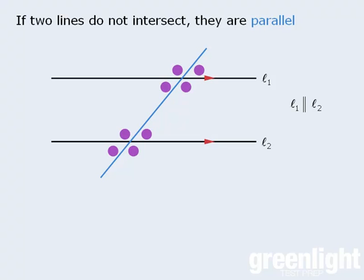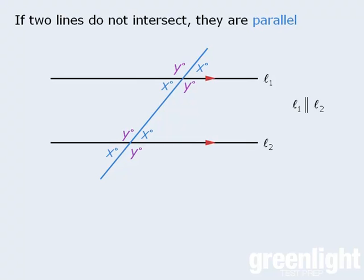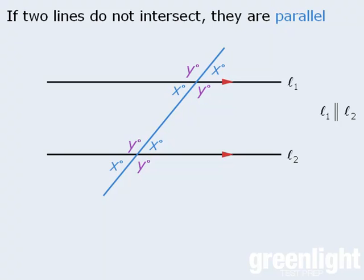Notice that the transversal creates several angles, and it turns out that many of these angles are equal. For example, all of these angles are equal. So if you know the measurement of one of these angles, then you will know the measurement of all of them. Similarly, each of these angles are equal, so we essentially have 8 angles where each angle is either x or y. Now parallel lines and transversals are frequently tested on the GRE, so make sure that you can identify all of the equal angles when a transversal intersects parallel lines.